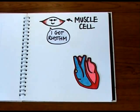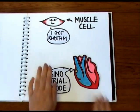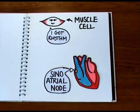And this is achieved by a specialised group of pacemaker cells called the sinoatrial node. This behaves a bit like a metronome, triggering other heart cells to contract at the right time.